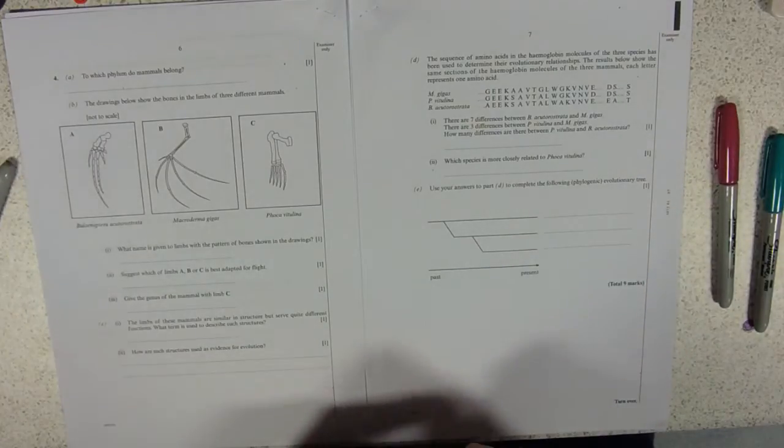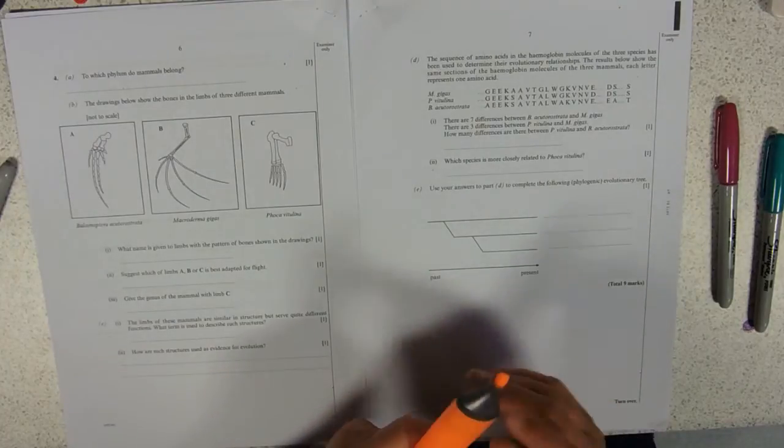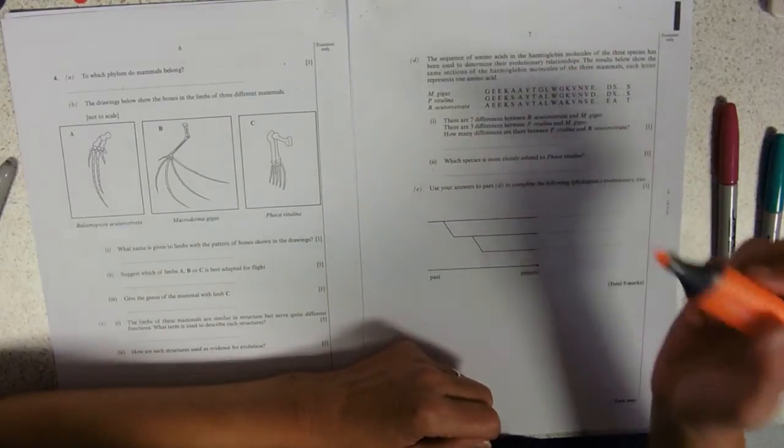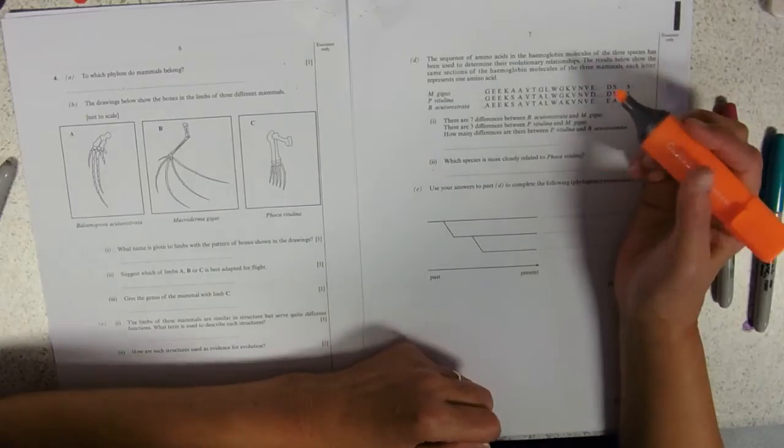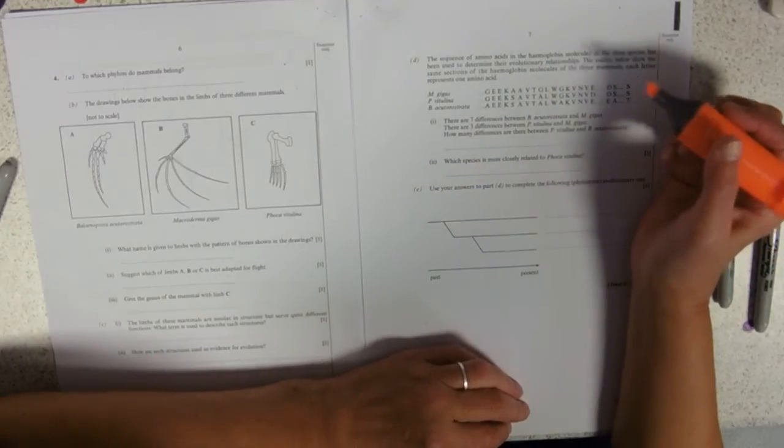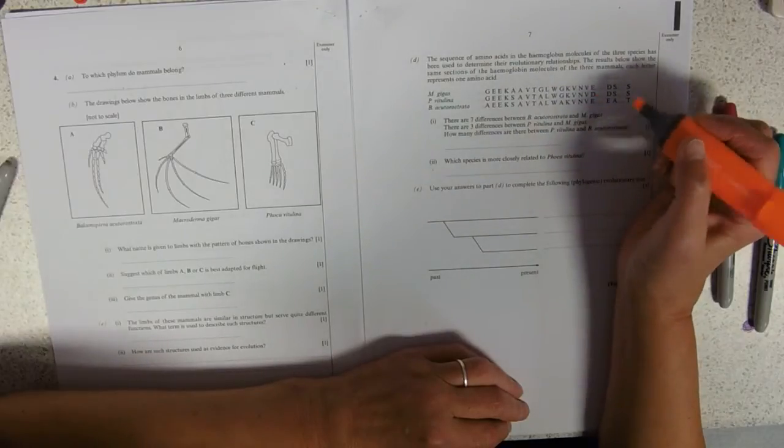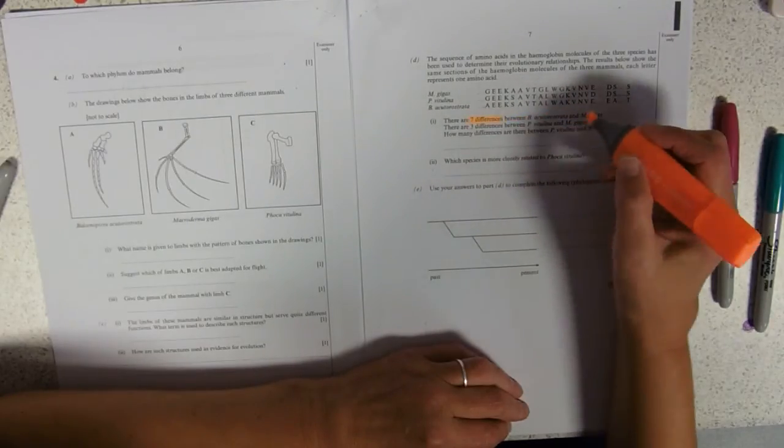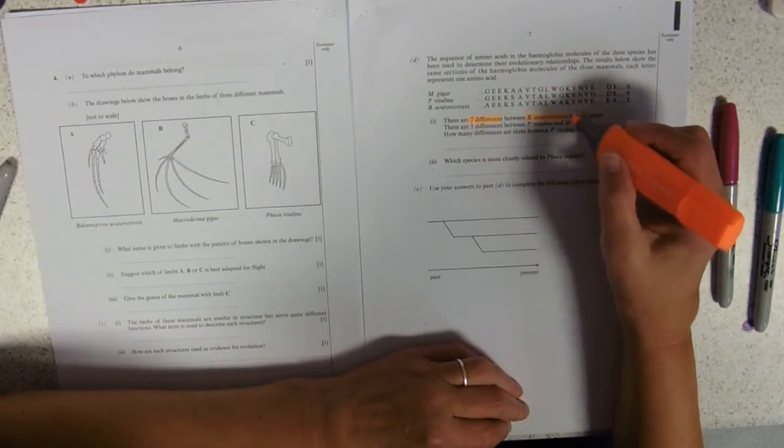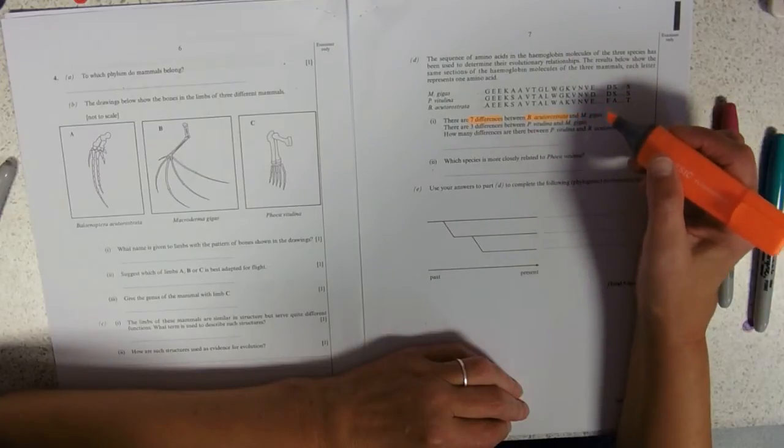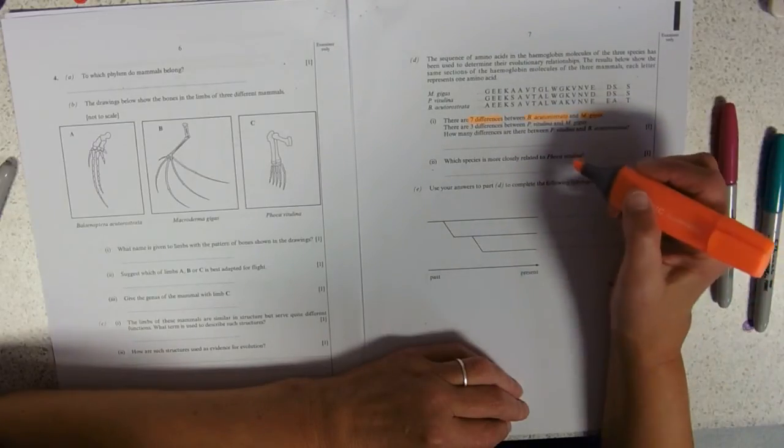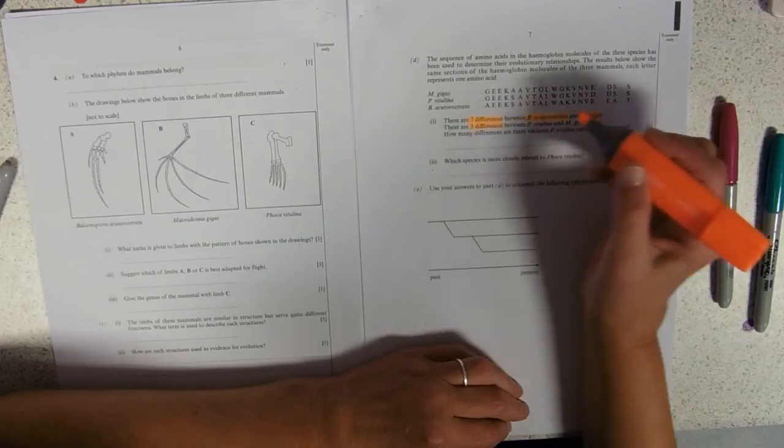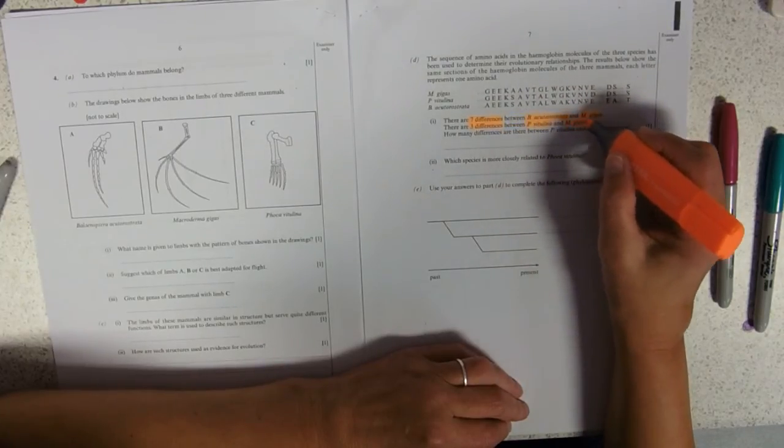But here, in D, we've got a sequence of amino acids, and they've just been allocated letters, and it's been used to determine evolutionary relationships, so this is sort of the application of the evidence for relatedness. We've got the same sections of haemoglobin. Each letter represents one amino acid, and it tells us that there are seven differences between these two species, B. acutorostrata and M. gigas. Three differences between P. vitulina and M. gigas.